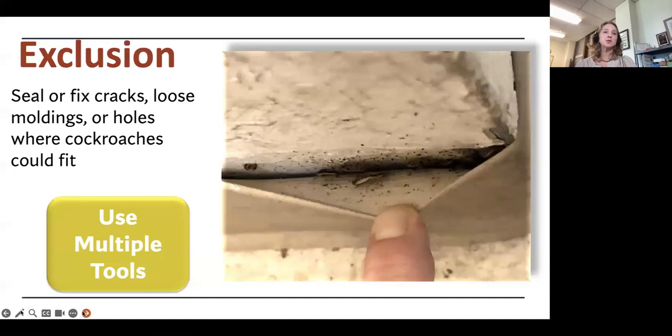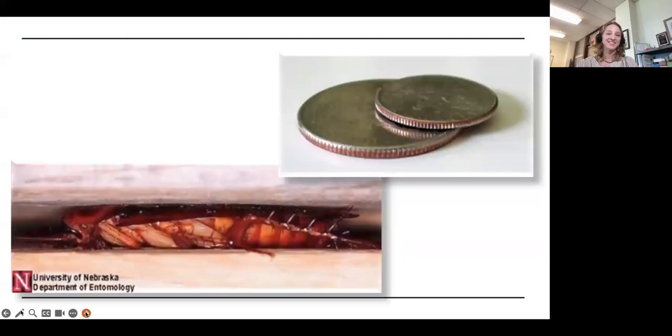Exclusion also means is also another really important tool. Sealing those cracks and crevices, loose moldings, holes where the cockroaches can fit eliminates harborage too. This is that rubber-like cove-based molding, and I'm pulling it away from the wall here. The professional was only treating in the kitchen, and I walked around the apartment. I could see signs of cockroaches in other rooms. And then I pulled this back and I was like, how about here? So you really have to know where the cockroaches are, treat where they are. But if you have this loose molding, especially in a unit with cockroaches, consider resealing that.